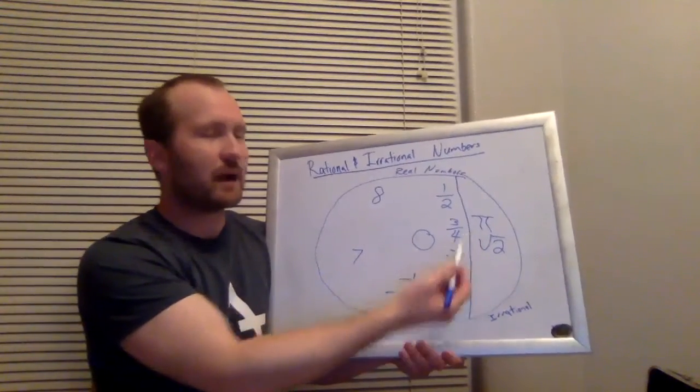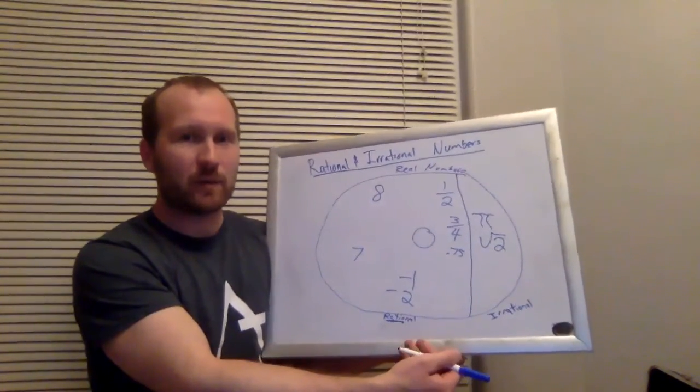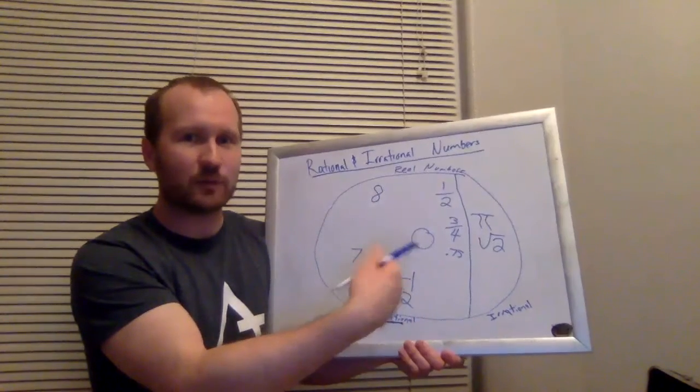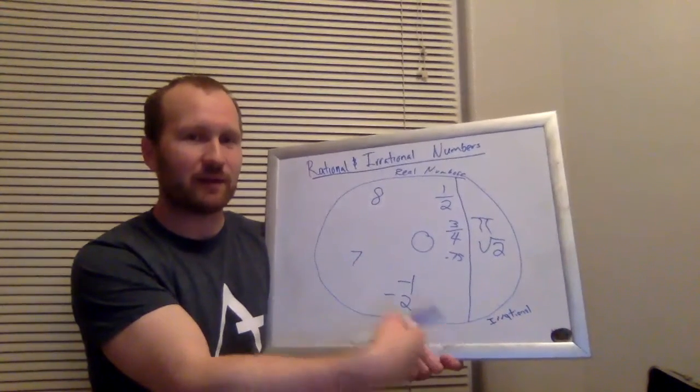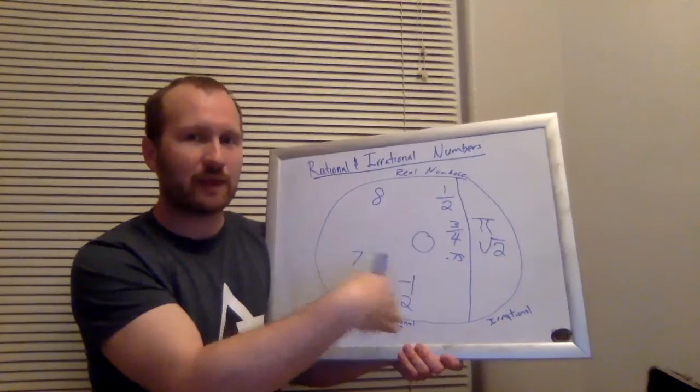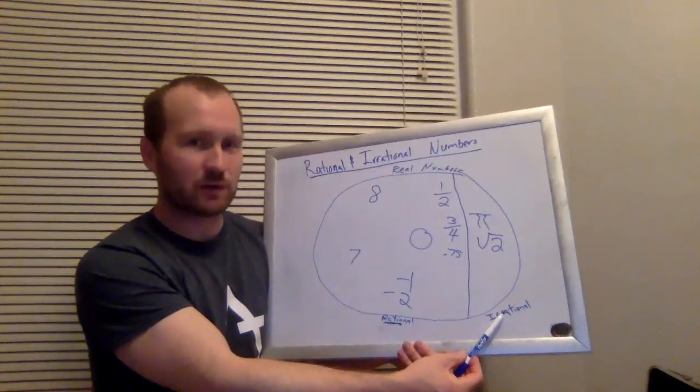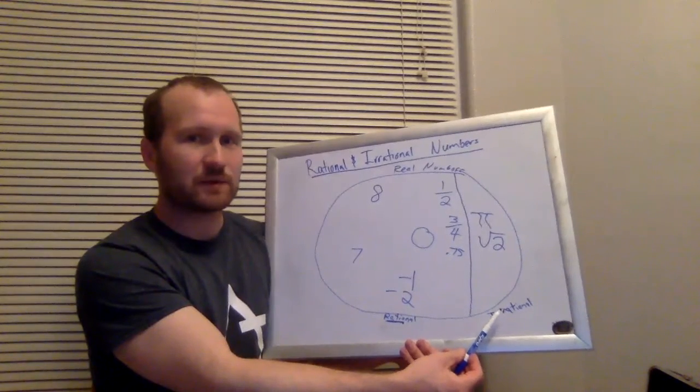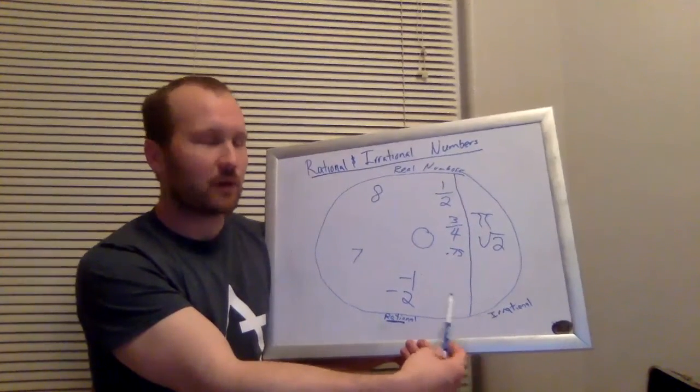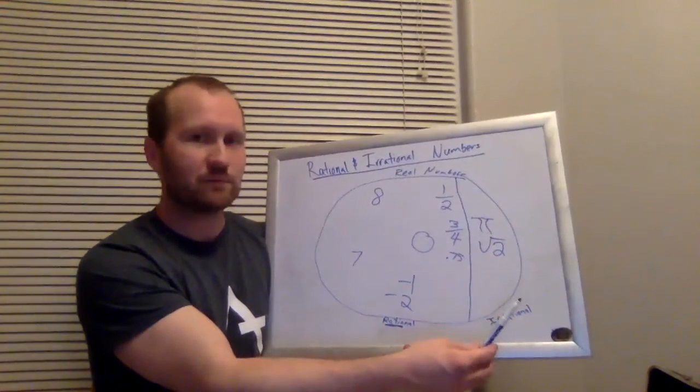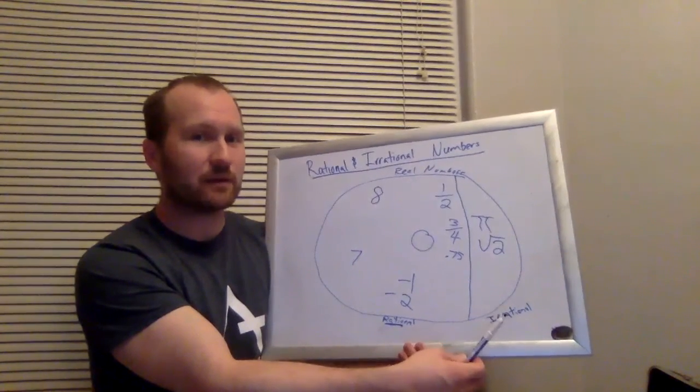But these, I mean, I could write pi over one as a fraction, but that's still pi, right? Pi is still in there. That's a decimal number that never terminates, and that's what happens here with the irrational numbers, is that these numbers never end. They go on forever in their decimal representation, and they never repeat either.